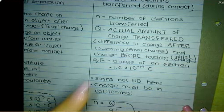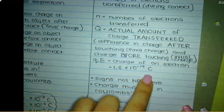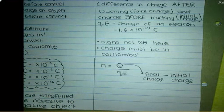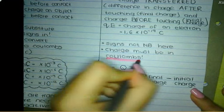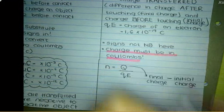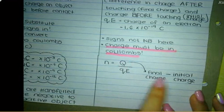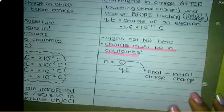An electron is a negative thing, so QE is negative 1.6 times 10 to the negative 19 coulombs. Signs are not very important in this formula. Charges must be in coulombs — this is especially vital for this formula. Q is the final charge on one object minus the initial charge on the same object. So we're going to do an example.